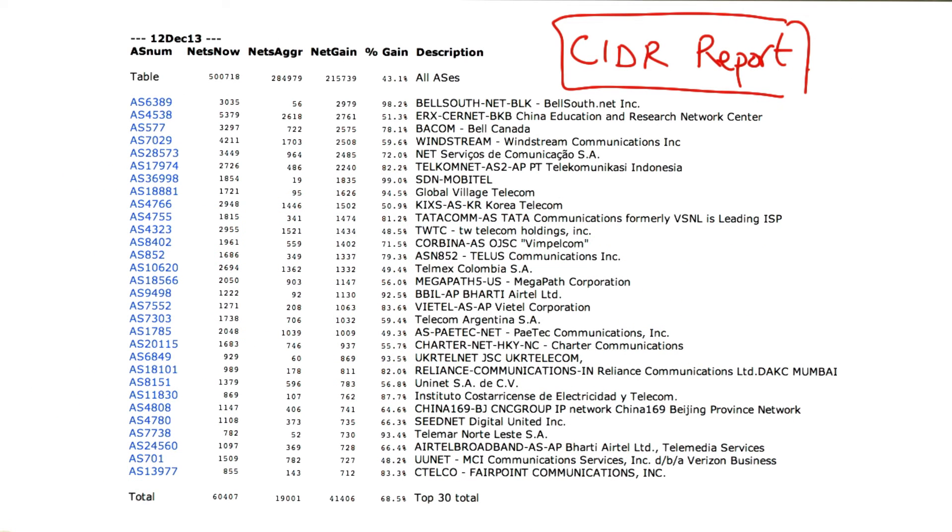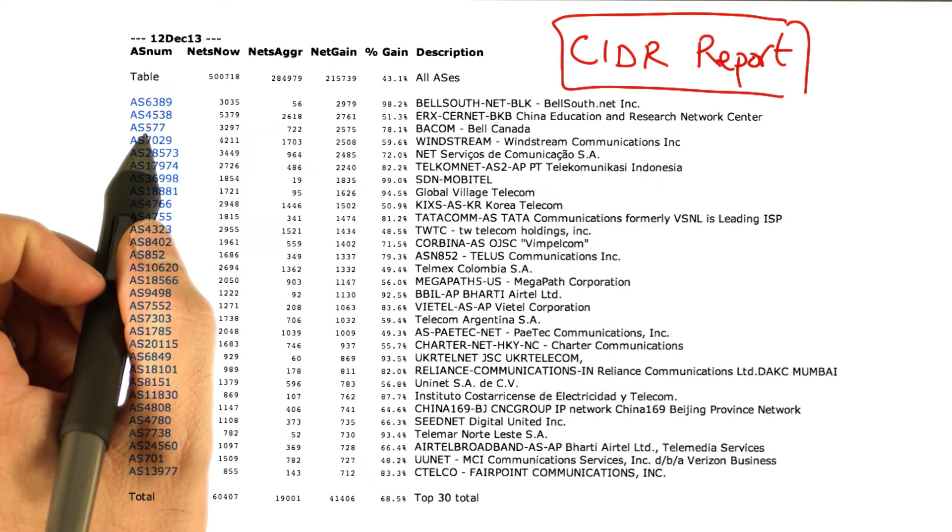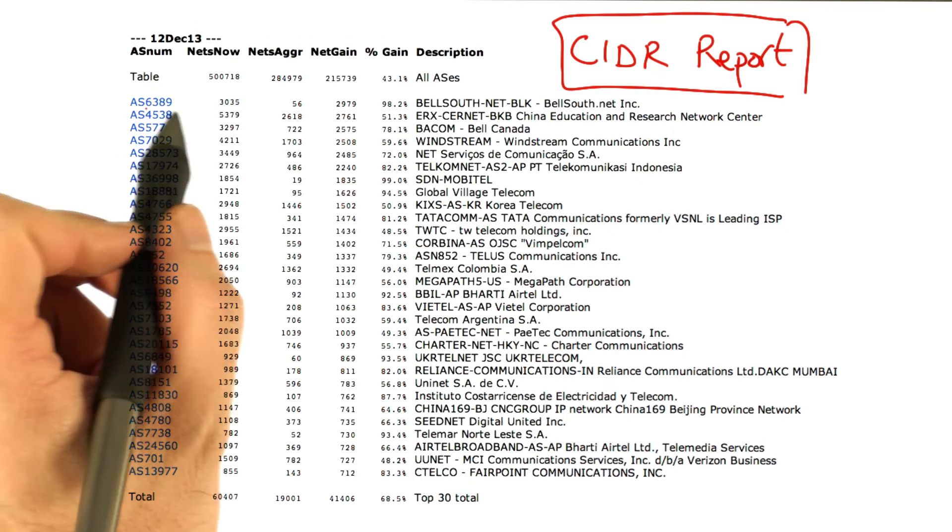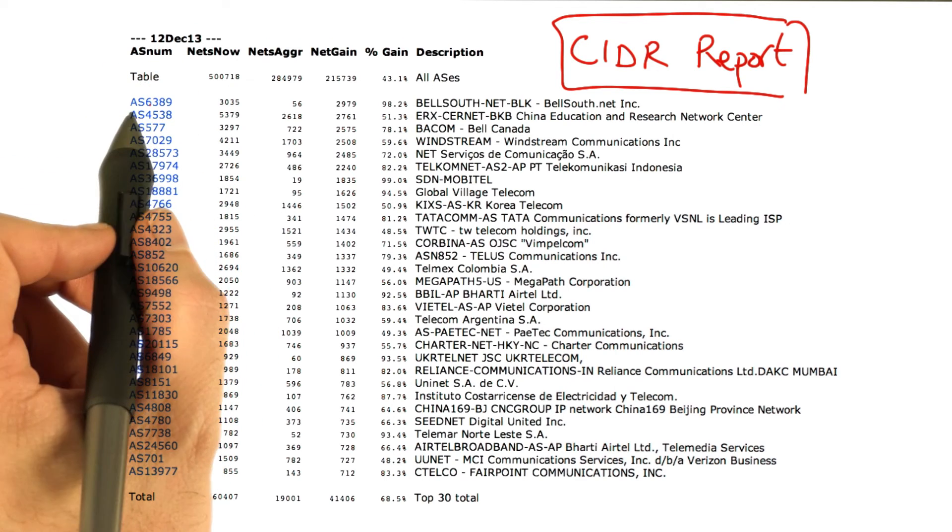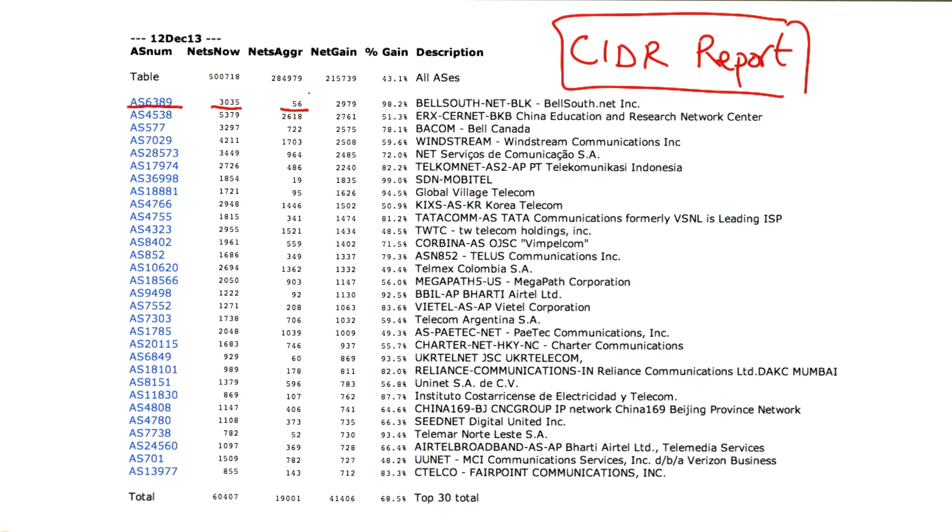A report called the CIDR report, which is released weekly, shows autonomous systems who are advertising IP prefixes that at least according to observation are contiguous and could be aggregated. For example, the top offender for the week of December 12, 2013 was AS6389. This single autonomous system is actually advertising more than 3,000 unique IP prefixes.